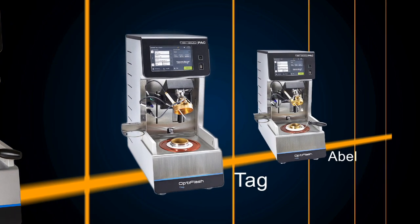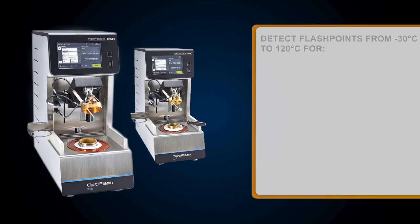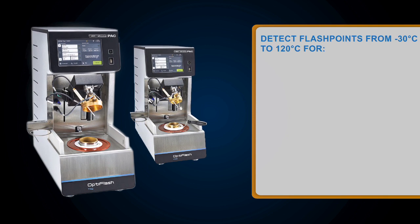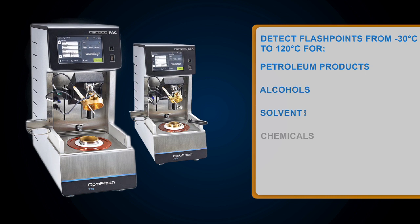The OptiFlash TAG and OptiFlash ABLE models accurately detect flashpoints from minus 30 to 120 degrees Celsius for petroleum products, alcohols, solvents, and chemicals.